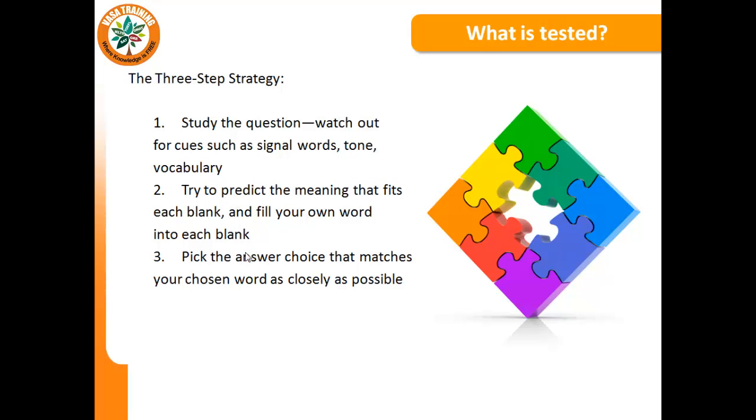So first I analyze, secondly I try to predict the meaning, and thirdly, now I go to the options. This is the stage of evaluation. I try to predict first of all what goes into the blank, and then I move to the answer choices and pick the one that matches the word I filled into the blank as closely as possible. If I have done step 2 wrong and there is no word which matches or is close to the meaning of the word that I picked, I will have to redo step 2. Maybe there is some problem in my fundamental understanding of the sentence. Maybe I didn't study the question closely enough. Maybe I misread a cue. Maybe something was meant to be negative and I assumed it was positive. I may even have to redo this step.